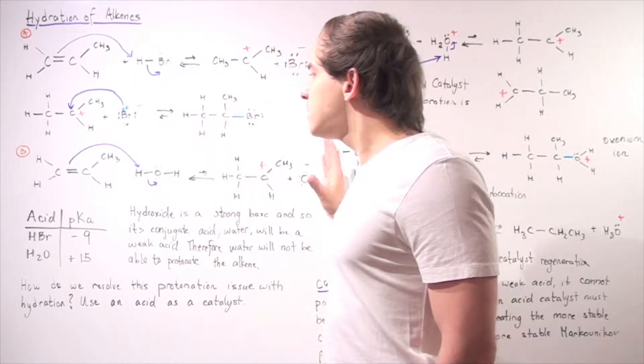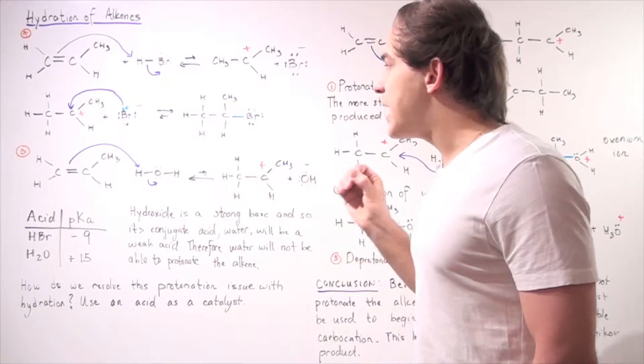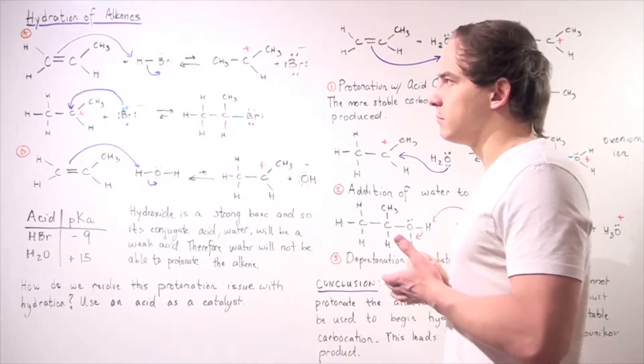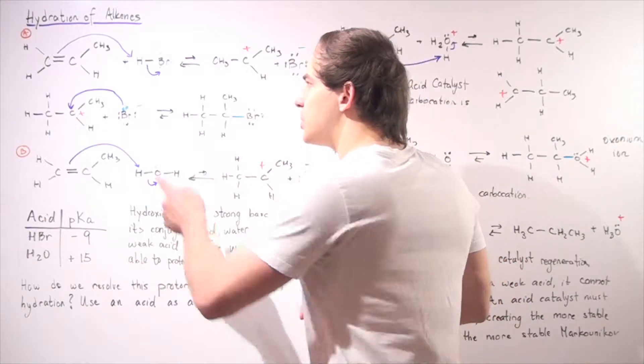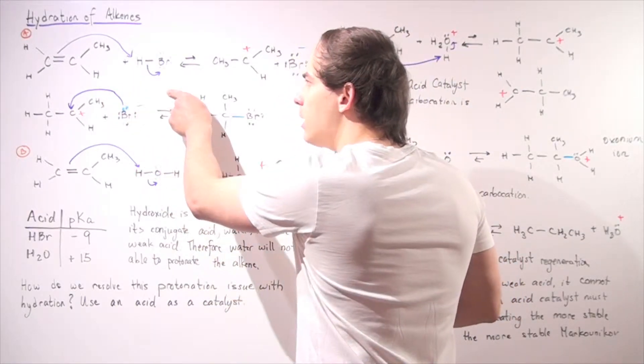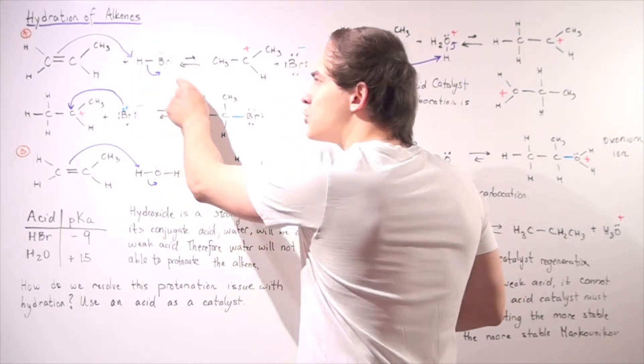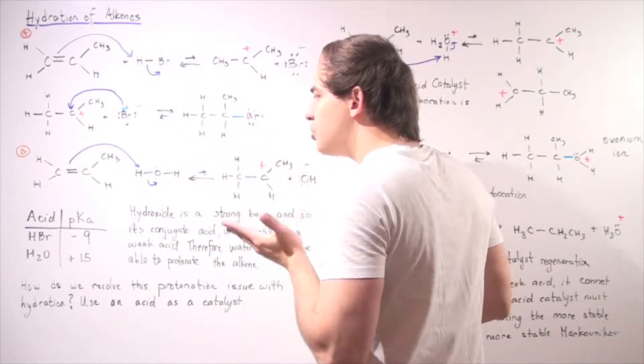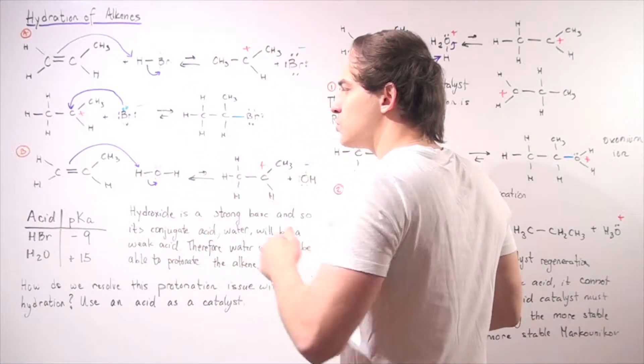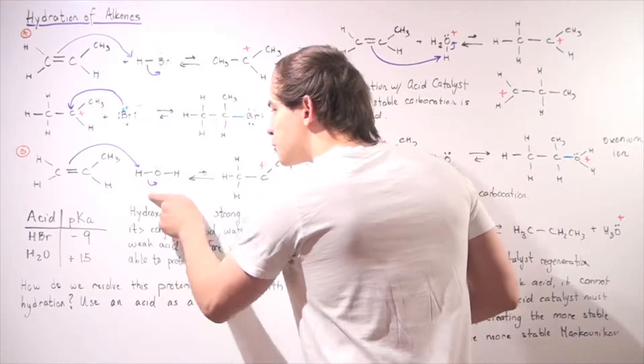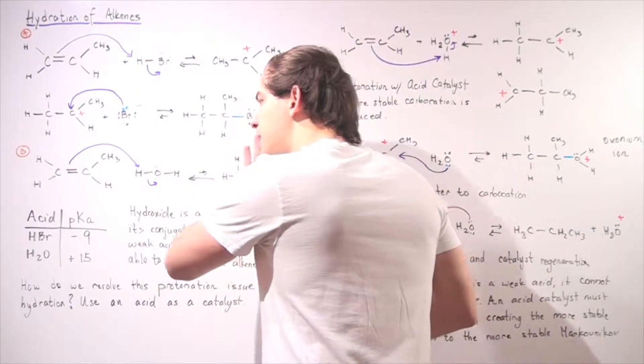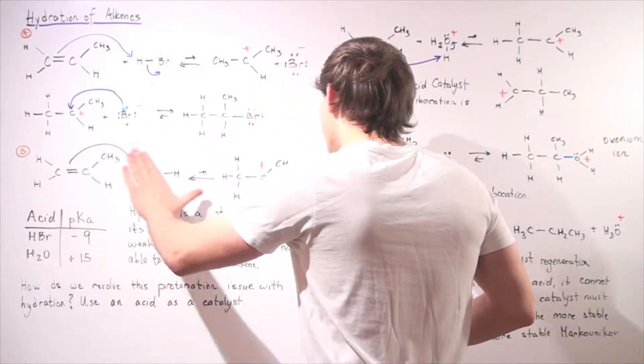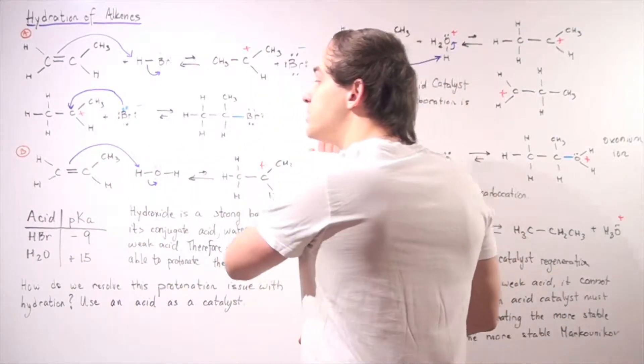Now let's look at the second type of reaction. Now we want to change things a little bit. We want to use the same alkene but now, instead of using an HBr molecule, an H attached to our halogen, we want to use a water molecule. So an H attached to our hydroxide. So we want to ask the question, will this reaction take place at a high rate or at least at a reasonable rate?